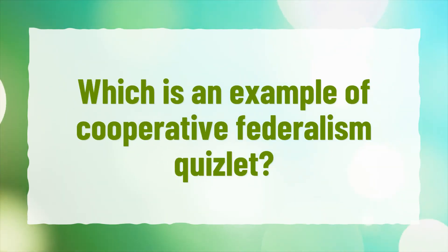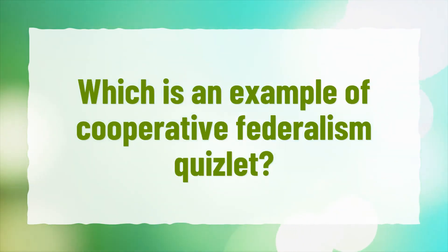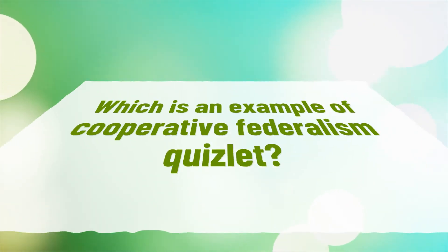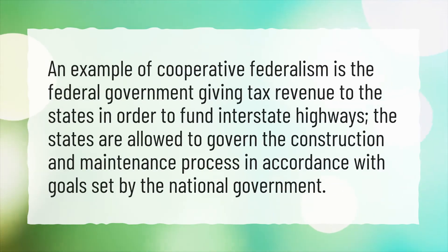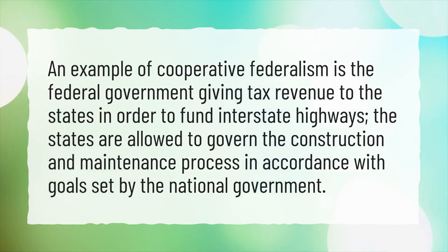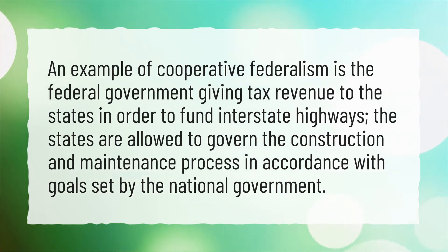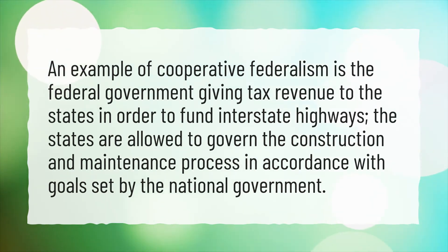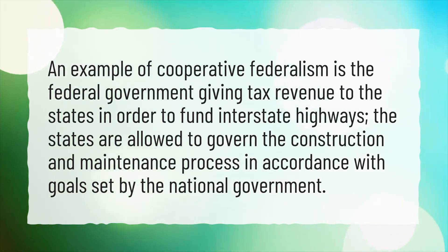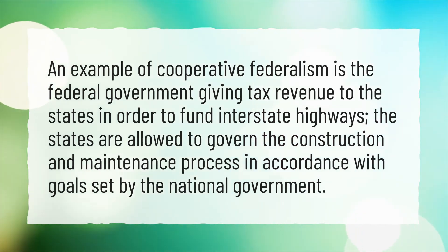Which is an example of Cooperative Federalism? An example of Cooperative Federalism is the federal government giving tax revenue to the states in order to fund interstate highways. The states are allowed to govern the construction and maintenance process in accordance with goals set by the national government.